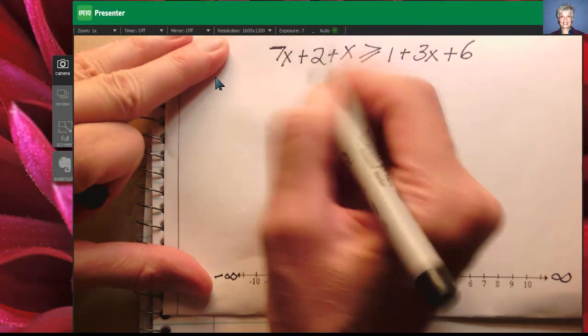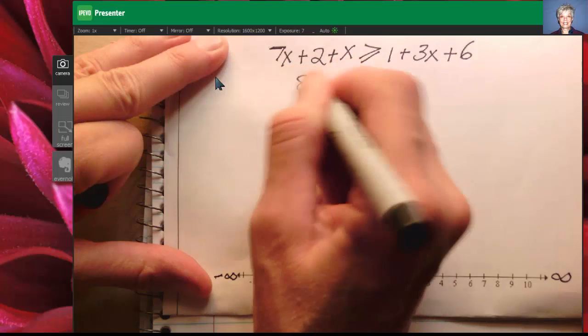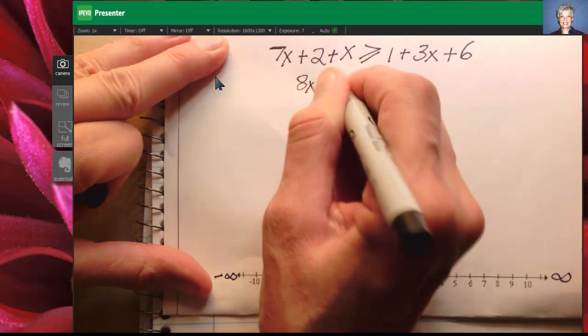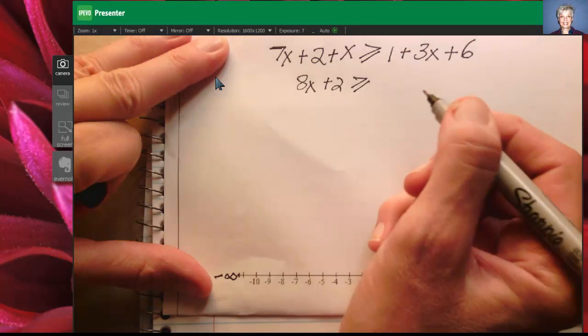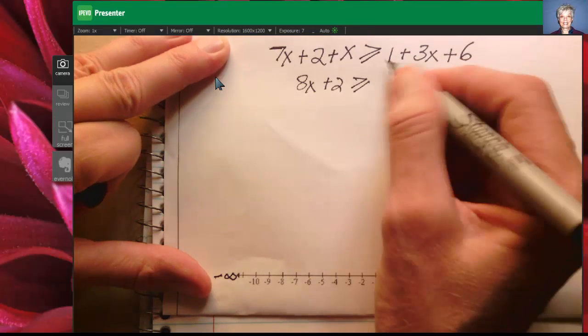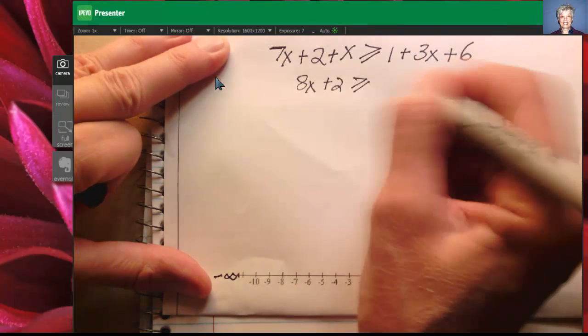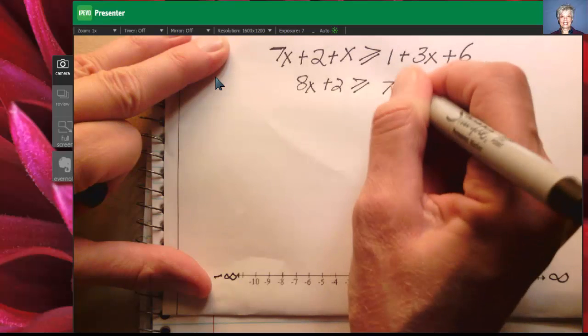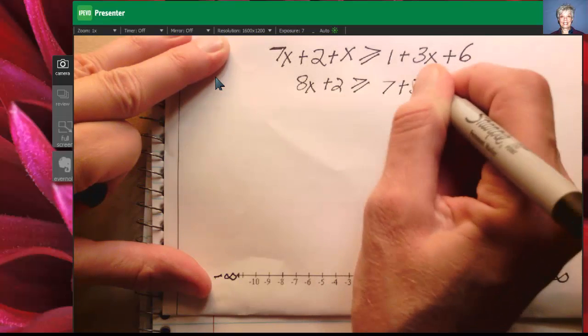7x plus x is 8x plus 2 is greater than or equal to, now 1 plus 6 is 7, so 7 plus 3x.